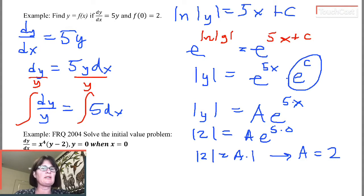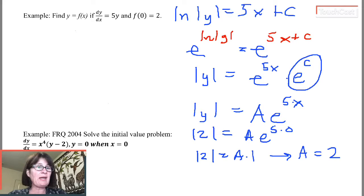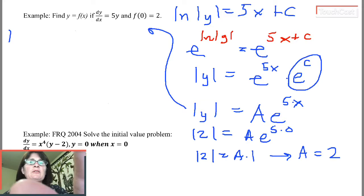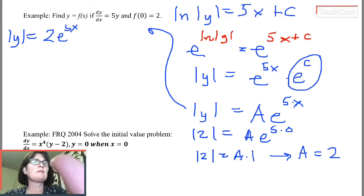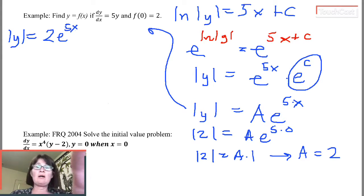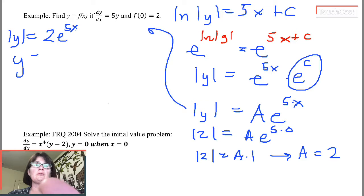I'm going to erase the other side and go back here. So now that I've figured out what a is, I'm going to come back to here. I'm going to get the absolute value of y equals 2 e to the 5x. Then I'm trying to isolate y, so y is equal to,